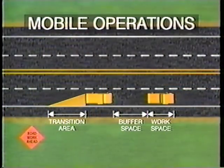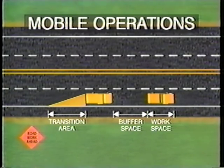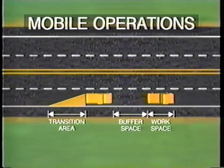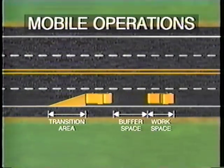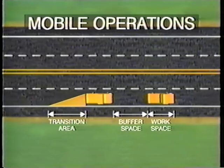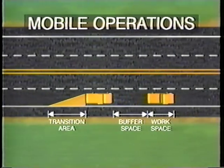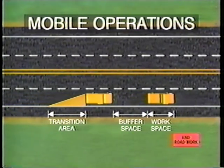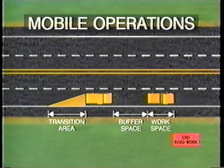With mobile operations, the transition area actually moves with the activity area, and the buffer space is the area between the shadow vehicle, if one is used, and the work crew. The termination area is usually obvious to the driver passing the work vehicle. The use of a truck-mounted attenuator should be considered for mobile operations.